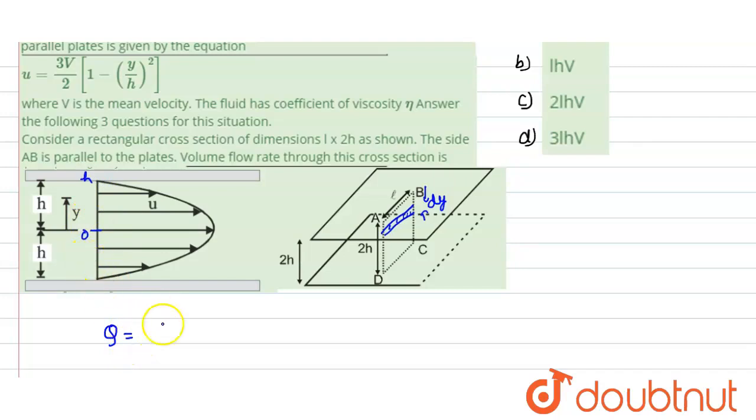So we can say that our flow rate would be equals to 2 times—why we have taken 2 is because we will be performing integration only one side from 0 to h, this would be the limit of y. Y would be extending from here to here. Now how is the flow rate written? It is written as flow rate is basically area into velocity.